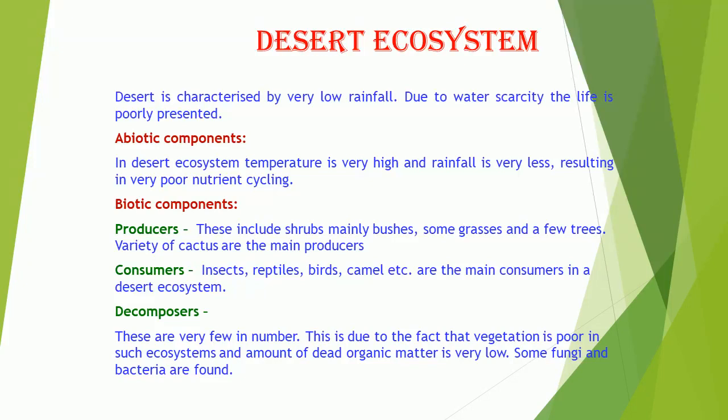Consumers: Insects, reptiles, birds, camel, etc., are the main consumers in a desert ecosystem. Decomposers: These are very few in number due to poor vegetation and low amounts of dead organic matter. Some fungi and bacteria are found.